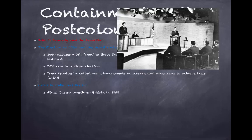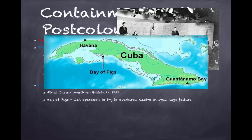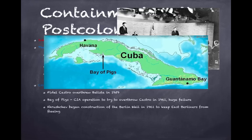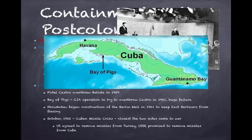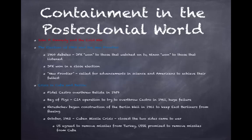Fidel Castro overthrew Batista in Cuba in 1959. This led to the Bay of Pigs invasion in 1961 — a CIA operation to overthrow Castro that was a huge failure. Khrushchev began construction of the Berlin Wall in 1961 to stop East Berliners from fleeing. In October 1962, the Cuban Missile Crisis lasted about 13 days — the closest the two sides ever came to war. As a result, the US agreed to remove missiles from Turkey and promised not to invade Cuba; the USSR agreed to remove missiles from Cuba.